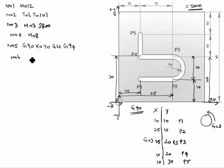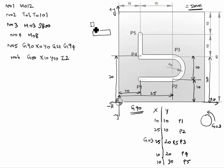N06: G00 X10 Y10 Z2 — G00 is rapid mode, moving to P1 position; Z2 means the tool is 2mm above the workpiece. N07: G01 Z-5 F50 — the material thickness is assumed 5mm, so Z-5 brings the tool down to depth. F50 is the feed rate.